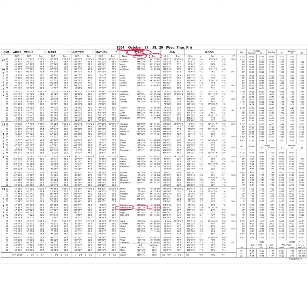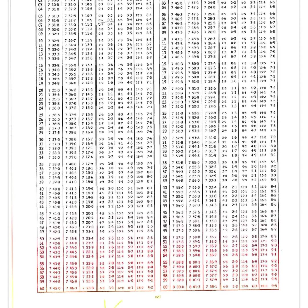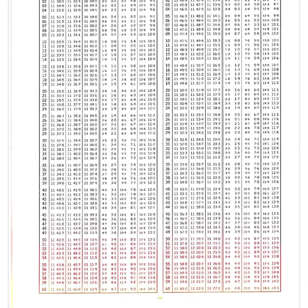To find GHA Aries, go to 27th October at 18 hours — the GHA Aries is 306° 25.8'. Now go to the increments page for 47 minutes 03 seconds, using the Aries column — not the Sun column. For 47 minutes (horizontal) and 03 seconds (vertical), the increment is 11° 47.7'.